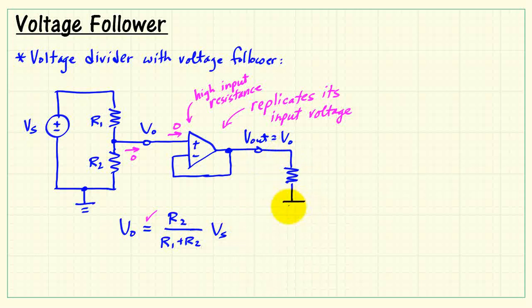Now, if we connect our original load to the output of the voltage follower, as we know, you do have to have some current flowing through R sub L. That current is going to be VO divided by RL. But where does that current actually come from?